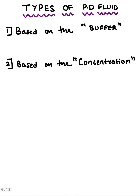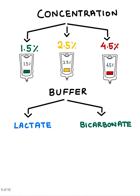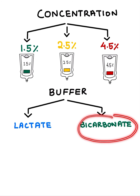Coming to the types of PD fluids, they are based on the buffer we use and the concentration of the PD fluid. If we talk about concentration, we have three types: 1.5%, 2.5%, and 4.5%. This concentration is based on the amount of dextrose present in the fluid, because dextrose provides the osmotic gradient for pulling the fluid. Based on the type of buffer, we have two types: lactate-based and bicarbonate-based. Lactate-based solutions are readily available and the bicarbonate-based ones are made in-house. Today we are mainly going to be talking about the bicarbonate-based PD fluid.